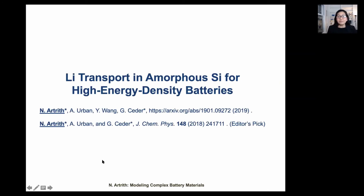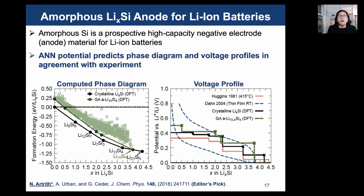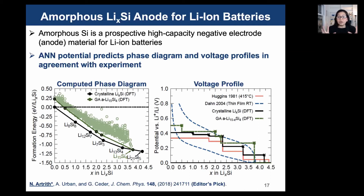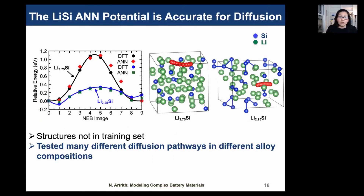I would like to spend more time on our work on silicon anodes. For next-generation batteries, amorphous silicon is a prospective high-capacity anode material to replace graphite. We trained a neural network potential to reproduce all lithium-silicon ground-state structures and also amorphous structures. The phase diagram of different lithium-silicon phases is shown on the left. The NN potential predicts the same lithium structures and energies as DFT. On the right, the predicted voltage profiles from our calculations are in good agreement with experiments. We validated our NN potentials for lithium diffusion paths, and the agreement between NN potentials and DFT is excellent.